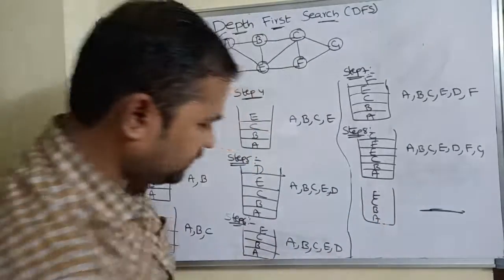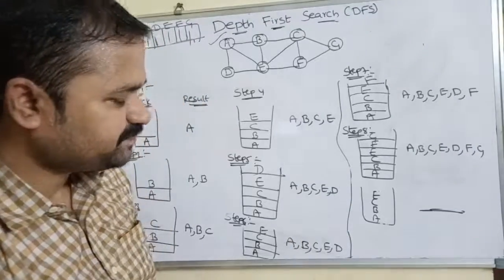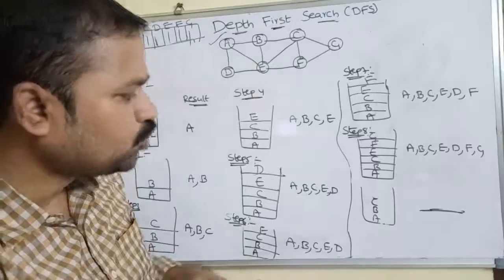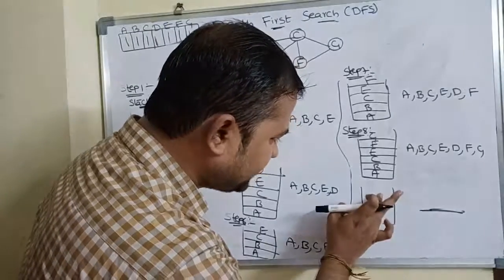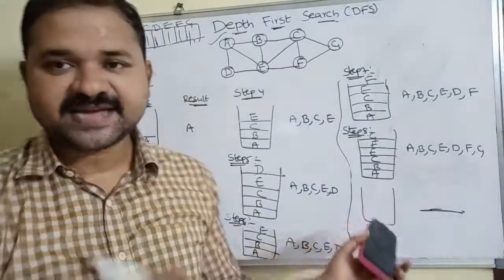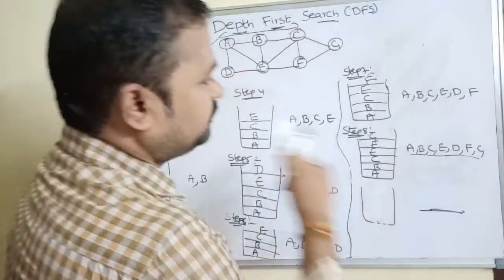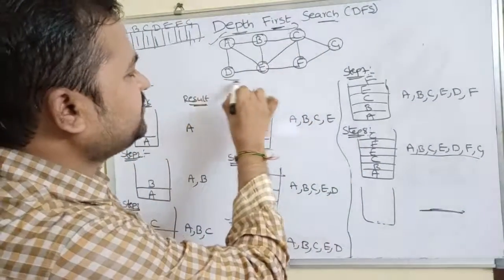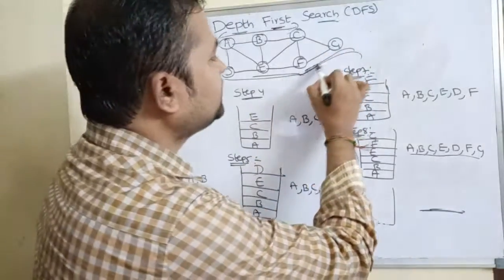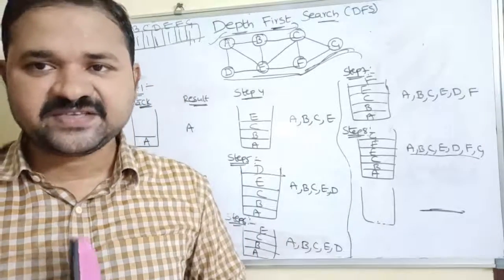Continuing the backtracking: we delete E from the stack, then C, and finally the stack is empty. The final output is A, B, C, E, D, F, G. This means we first visited level 0 (A), then level 1 and deeper nodes in order. In this way we can traverse a graph using the DFS algorithm.